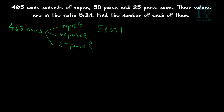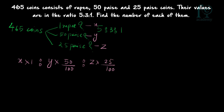Let the number of 1 rupee coins be x, the number of 50 paise coins be y, and the number of 25 paise coins be z. The value of 1 rupee coins is x×1. The value of 50 paise coins is y×(50/100), and the value of 25 paise coins is z×(25/100).